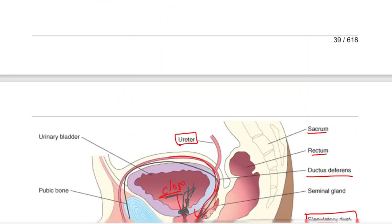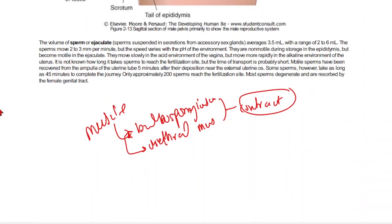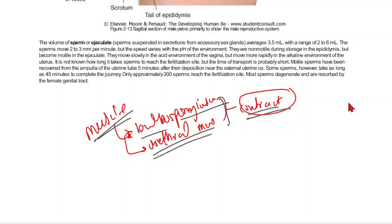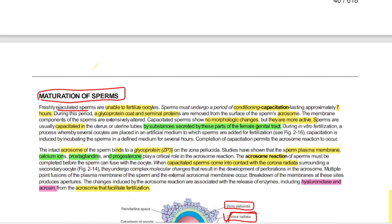There are two muscles: the bulbospongiosus muscle and the urethral muscle. Both contract, and due to this contraction the sperm move with high speed into the vagina. Next, we will discuss maturation.